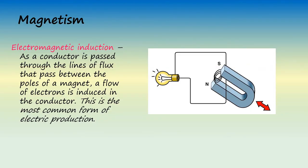In a process called electromagnetic induction, as a conductor is passed through the lines of flux that pass between the poles of the magnet, a flow of electrons is induced in the conductor. This is the most common form of electric production. The alternators and generators in our automobiles and aircraft generate electricity based upon this principle. The bulk of the electricity used in our homes, hospitals, schools, offices, etc. is generated by electromagnetic induction. Huge steam-powered generating plants powered by coal, natural gas, or nuclear fuel, as well as hydroelectric generating plants, supply most of the world's electrical needs through the process of electromagnetic induction.